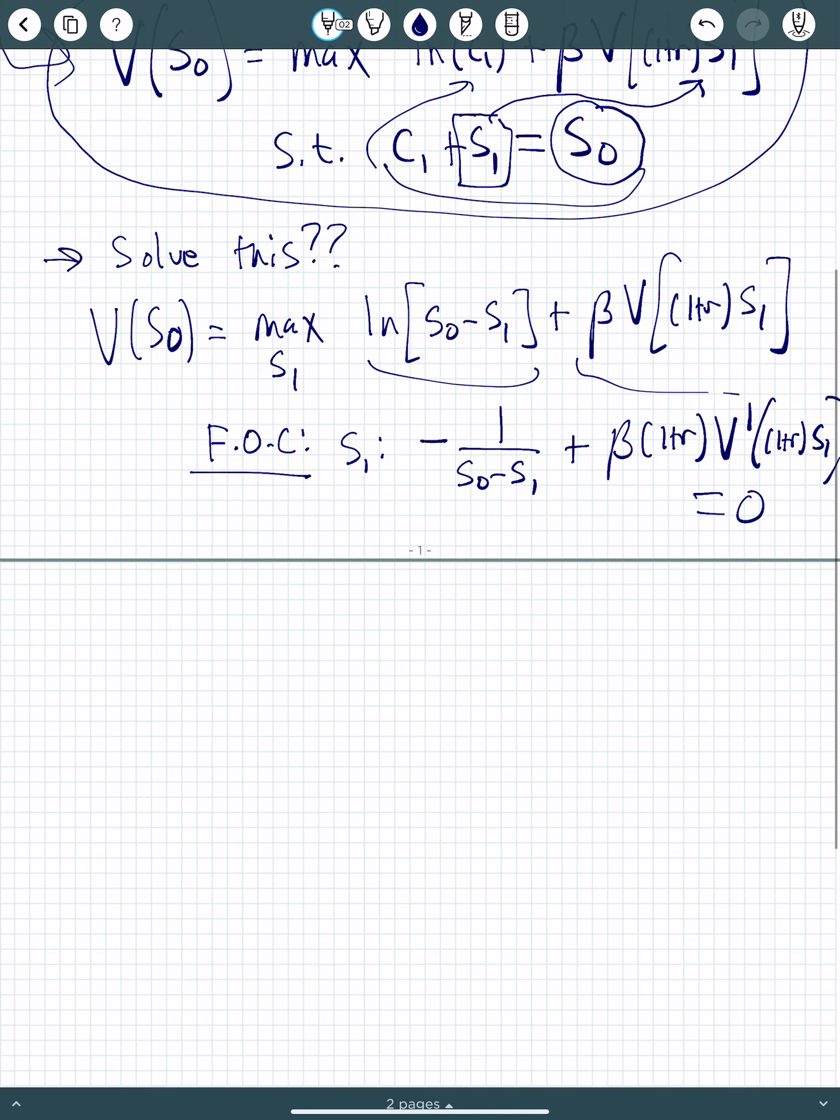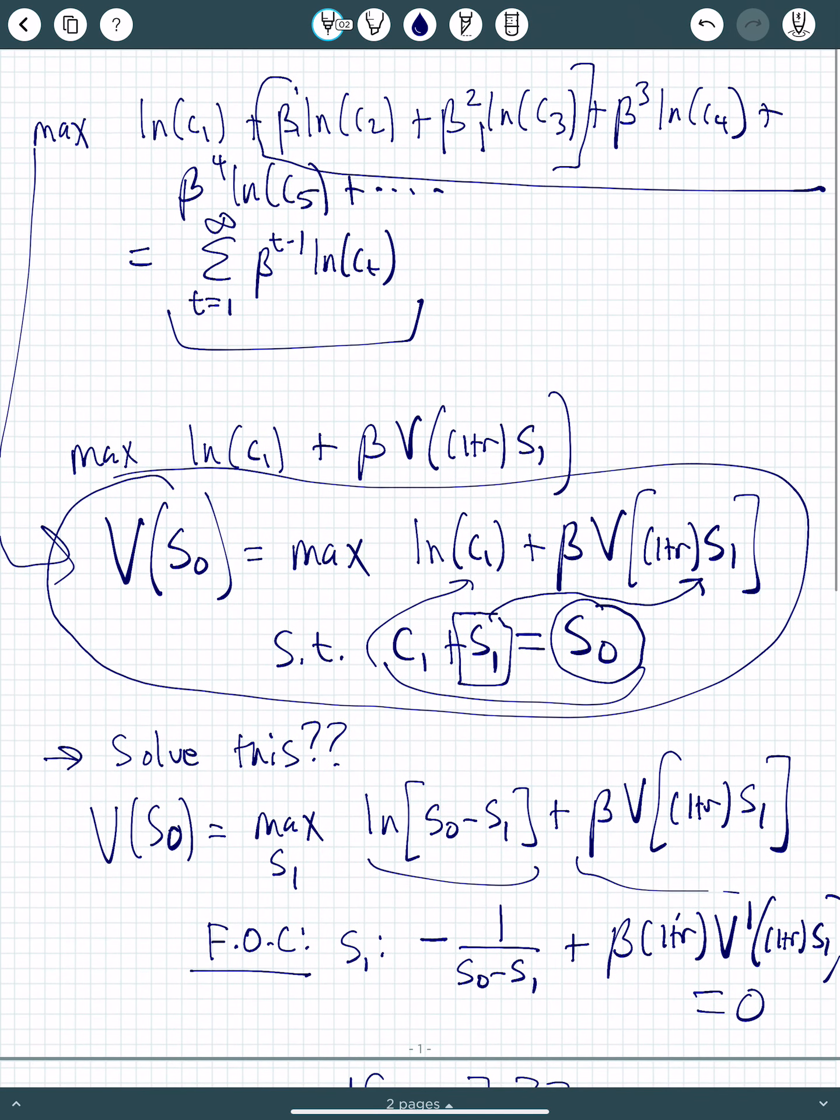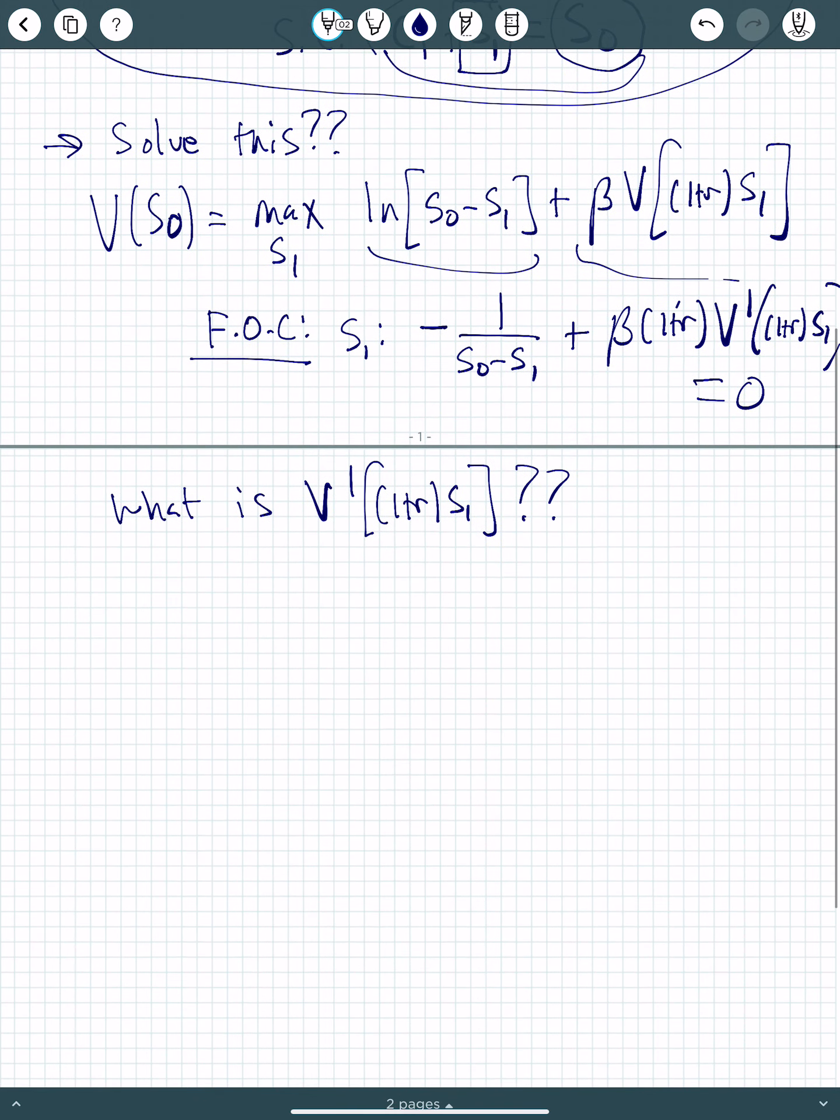So, all right, so here's where it gets a bit tricky. What is this v prime? Now, I could write the problem out. I mean, I could go up here, and I could look at where is s1 going to show up there? And I could differentiate those terms with respect to s1. Now, I would come to the same solution. What we're going to see here is that we don't actually have to do that. So what I can do is I can use the envelope theorem.